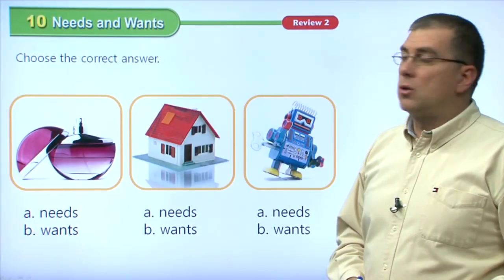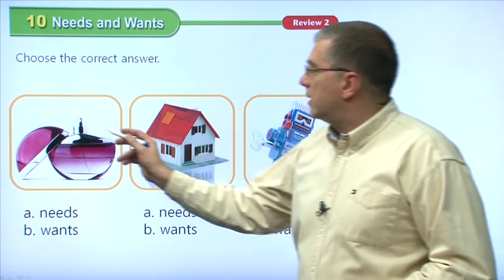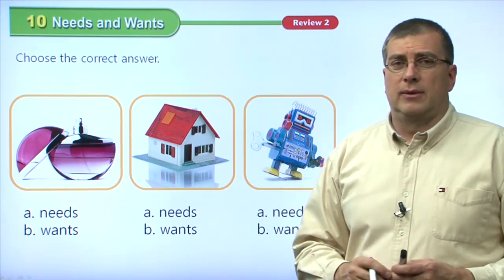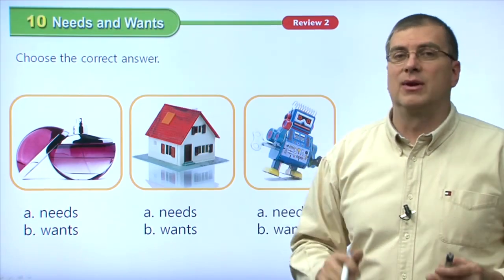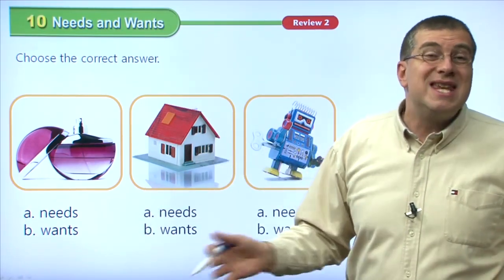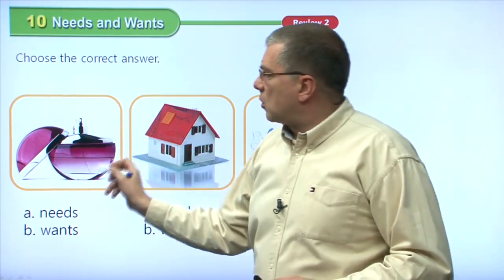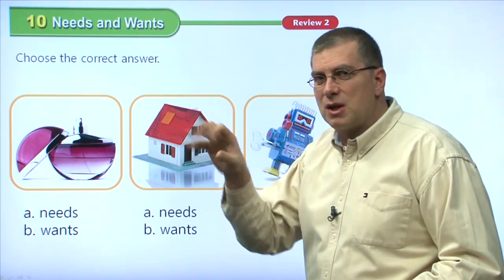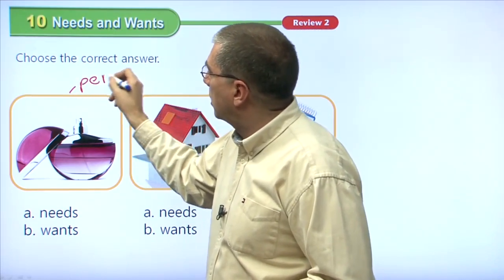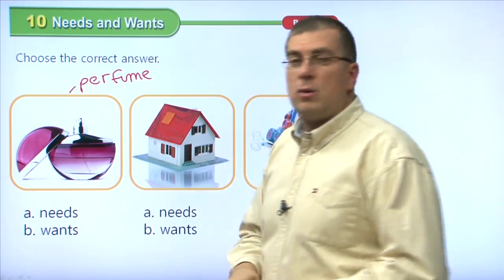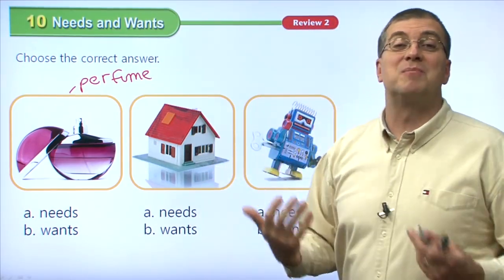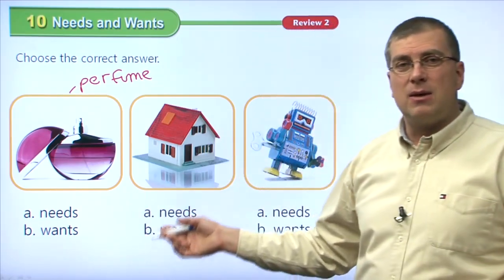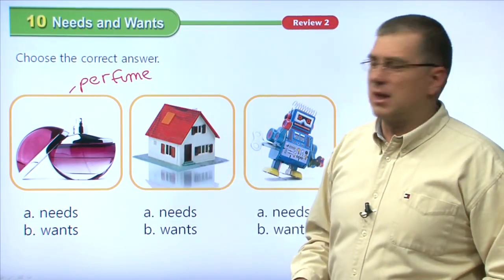Let's move on to our mini quiz. Choose the correct answer. We're talking about needs and wants — what do you need in your life, and what is just a want? Needs are things you absolutely must have; wants are things you just want to have. This first picture — if we look closely, there's a little button on top, you push it and it sprays out perfume. We use perfume to make us smell better. So do we need perfume or just want it? Of course, we don't really need perfume — it is a want.